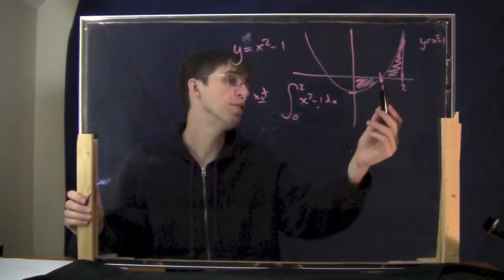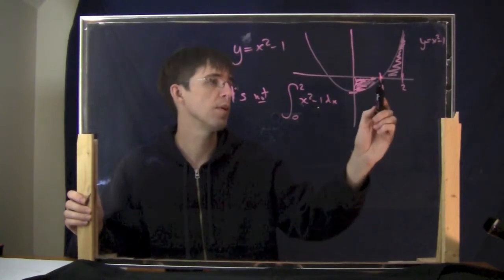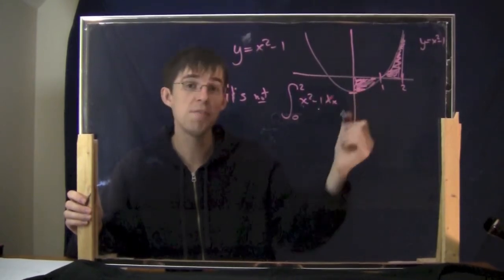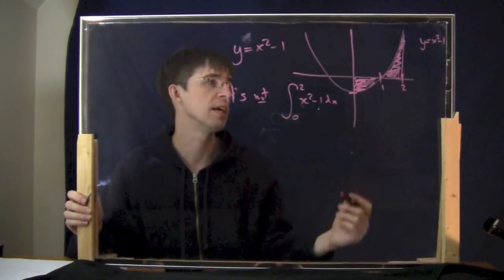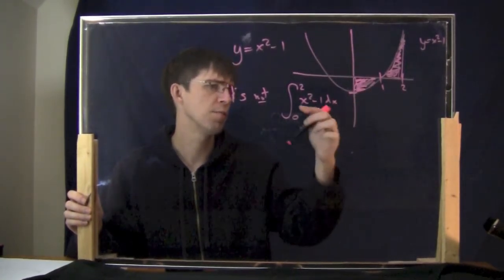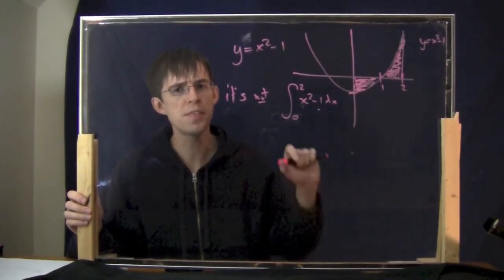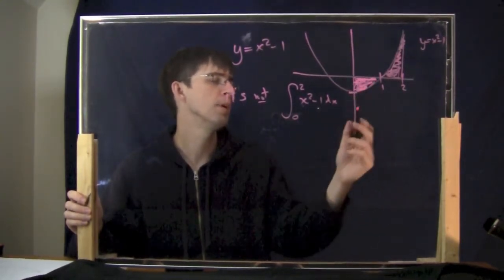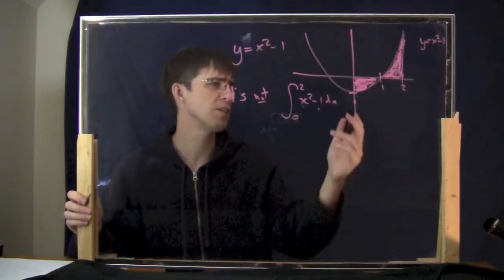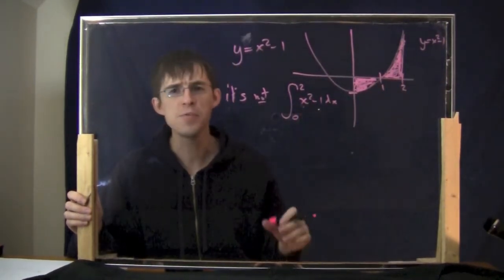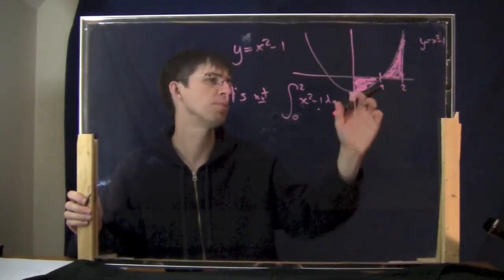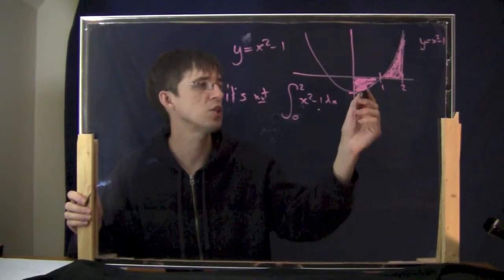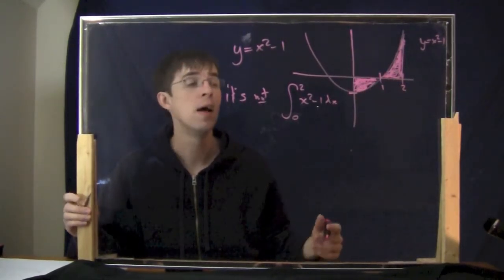Why not? Because this part here is below the x-axis and this part here is above the x-axis. When you compute the integral like this, it counts the area below the x-axis as negative — the y values are all negative there, so you get negative area which gets added to the positive area. The answer would be smaller than the true area due to cancellation, and I do not want that cancellation to happen.